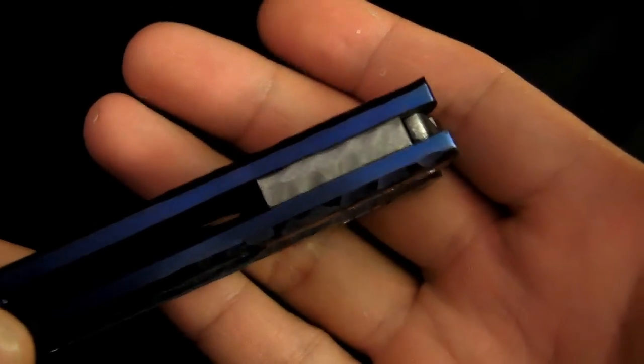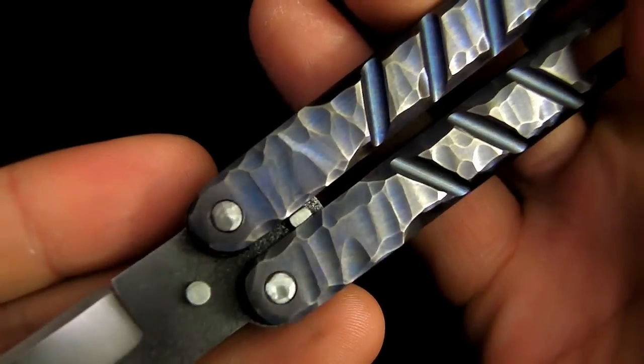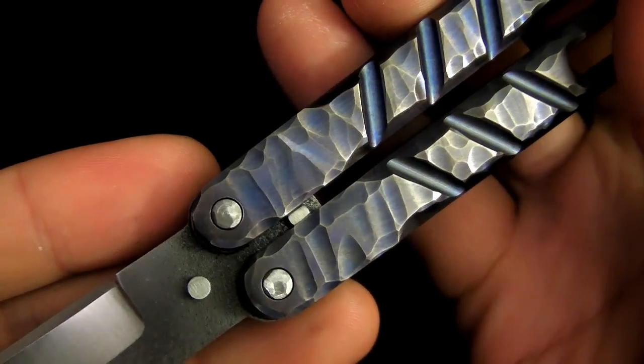And as you can see, he actually hit the spacer on both sides. So even the spacer got it. And if you look here, even the pivots got that texturing too. So that's pretty cool. I think it looks really great on this knife.